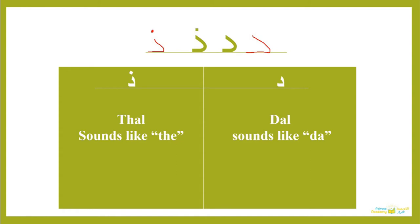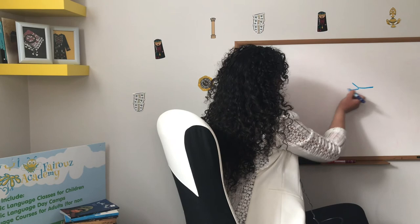The Dal and Dhal are one of the six Arabic alphabets that connect only from one side. Remember that Arabic alphabets have different shapes — beginning, middle, and end of a word. The Dal and the Dhal connect only from the right; they don't connect with the letter that comes after them to the left. So in the middle or end of a word, they would have a connector only to the right.